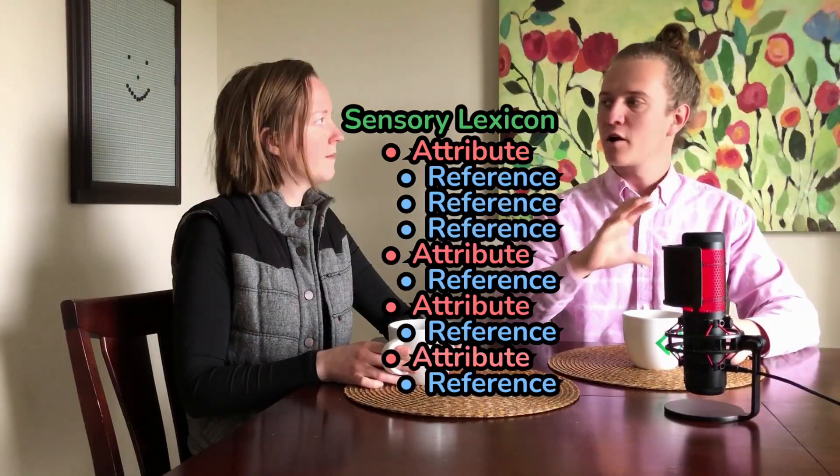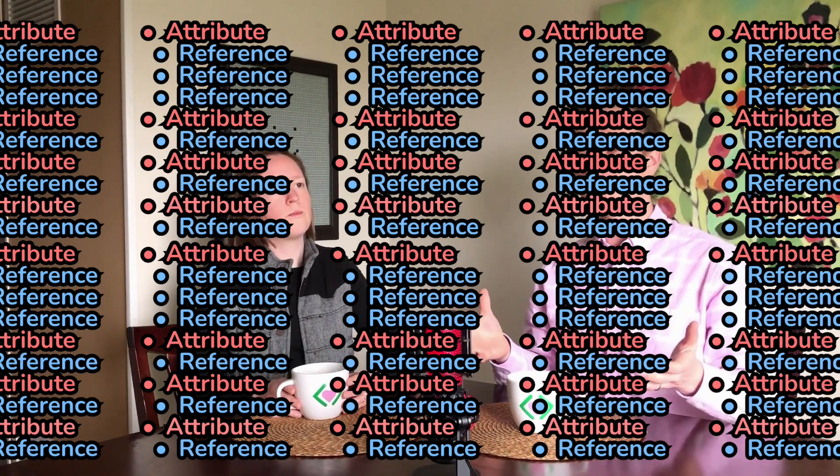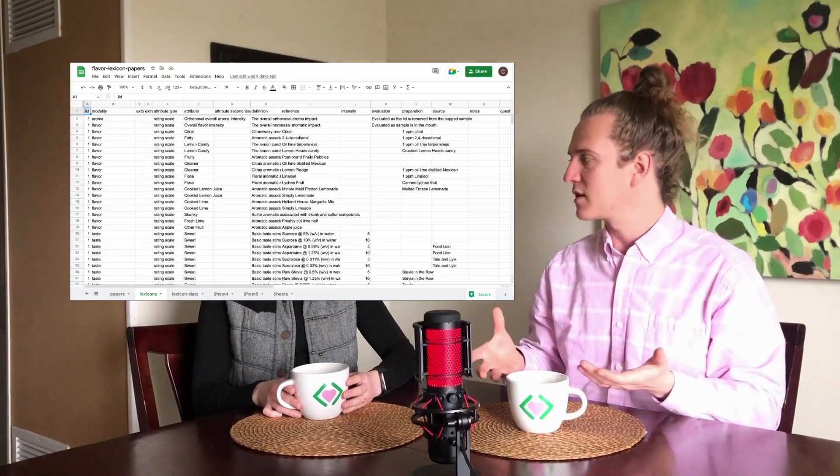So they can view the lexicon, specifically trying to do it in a way that's accessible to the user. The biggest challenge is making it accessible and managing the complexity of a sensory lexicon. Sensory lexicons have attributes, and attributes can have multiple references, so there's a hierarchy. It can be a lot of information — some companies have hundreds of attributes in their databases, and usually sensory scientists are working in Excel workbooks with this kind of data.